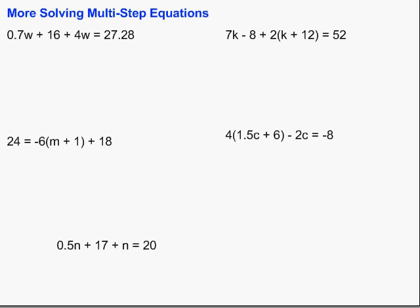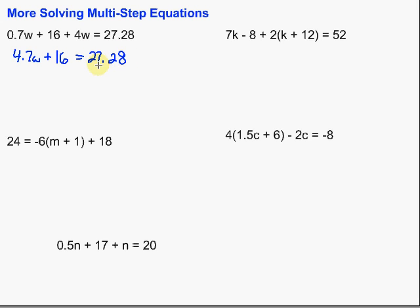In this first one, we need to get all the variables together first. We've got a 0.7w here and a 4w here. Let's go ahead and combine those like terms first. So we have 4.7w plus 16 — just bringing down everything else — equals 27.28. So we've combined the w terms first.